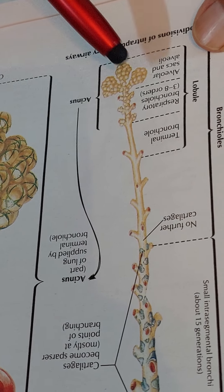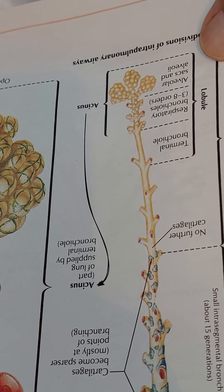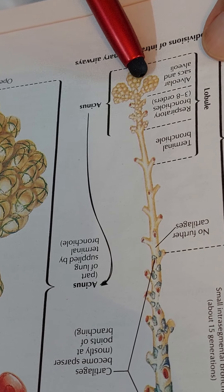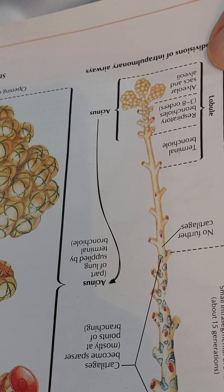The alveoli are lined by squamous epithelium of two types: squamous type 1, which lines 90% of each alveolus and where gas exchange occurs; and the remaining 10% consists of squamous epithelium type 2, which produces surfactant. Some migratory macrophages are also present here.